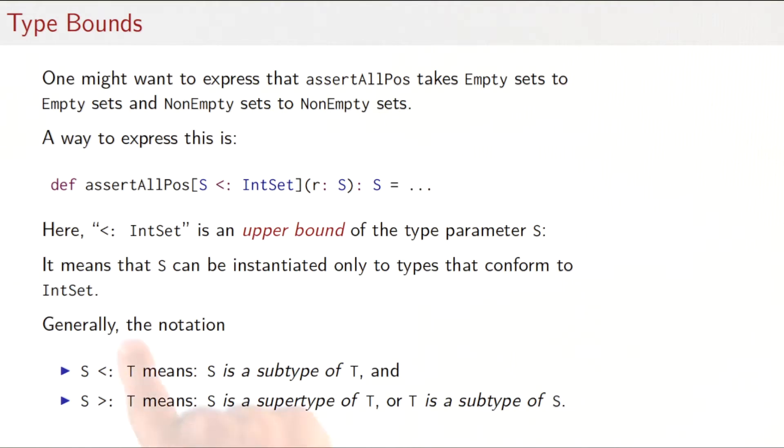We also will use the symbol less than colon outside of type bounds. Generally, S less than colon T will mean S is a subtype of T. So we have S and we have T, and S is a subtype of T. Whereas S greater than colon T means the opposite, so S is a supertype of T, or otherwise put T is a subtype of S.